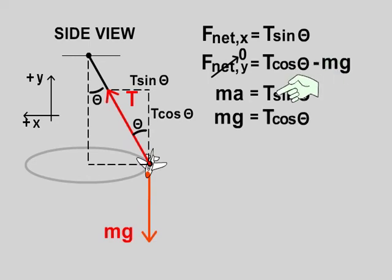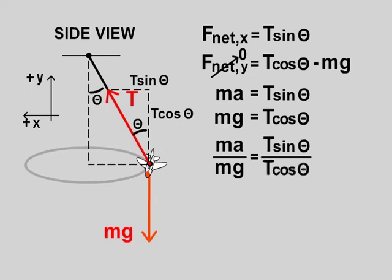Now, we want to solve these to get rid of the tension force because we don't have a way of directly measuring the tension force. Well, it's easy to solve them that way. We just divide one equation by the other. We'll have ma over mg equal T sine theta over T cosine theta.